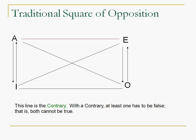On top, between the A and the E, we have the contrary. The contrary relation says that at least one of those has to be false. Both cannot be true. So, if A is true, E has to be false. If E is true, A has to be false. However, if A is false, E could be true or false.